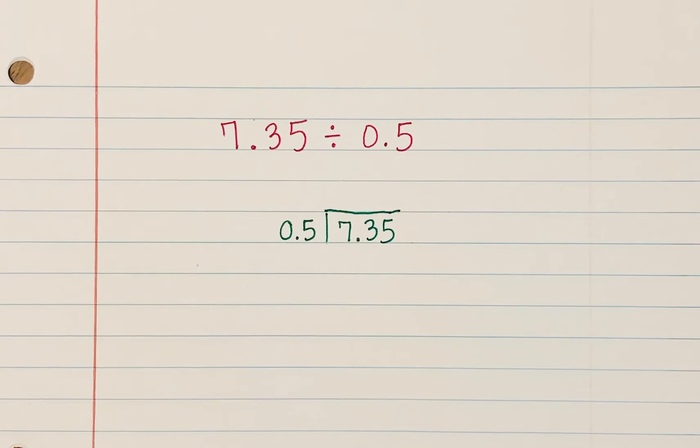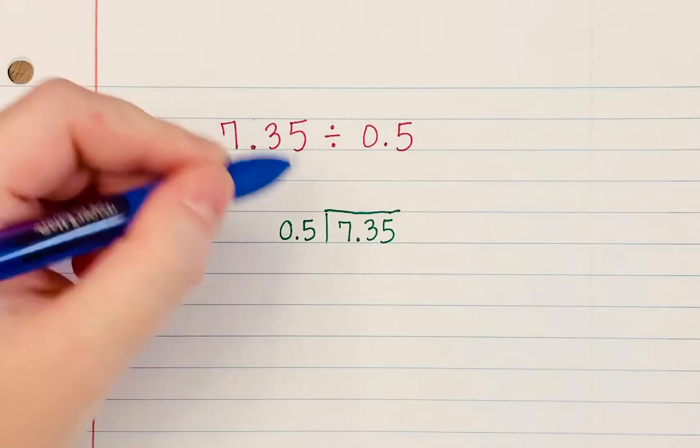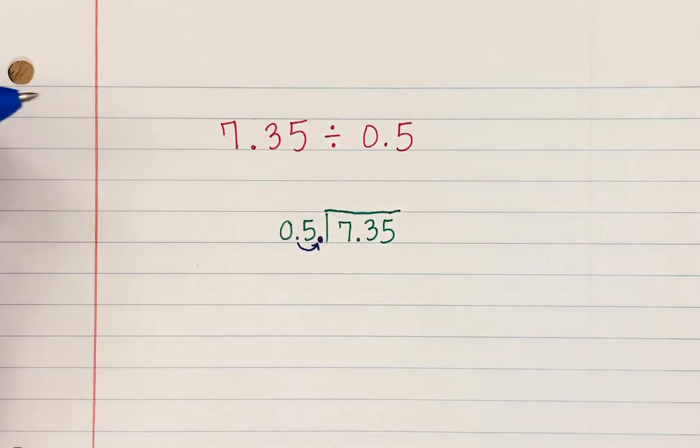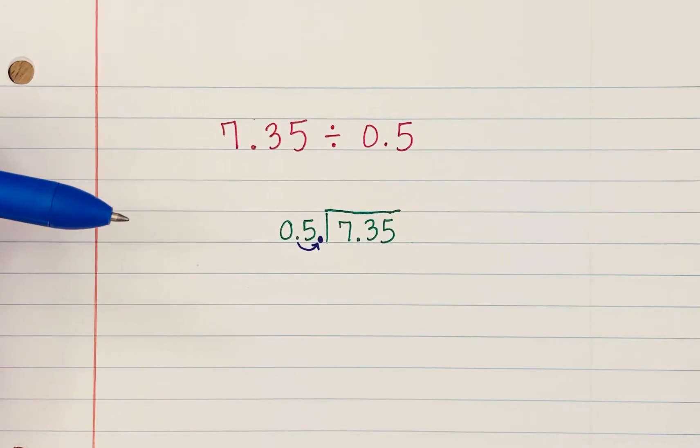And then we learned a strategy called slide, slide, raise the roof. So the first slide is you can't have a decimal in your divisor. The divisor is this number on the outside. So we have to move that decimal over to the right. We slide it to the right until it becomes a whole number.